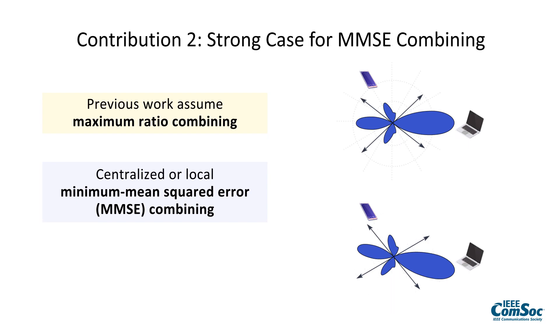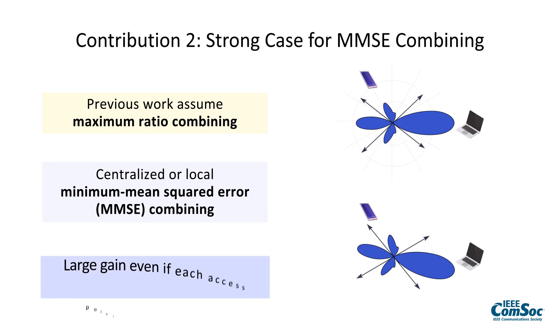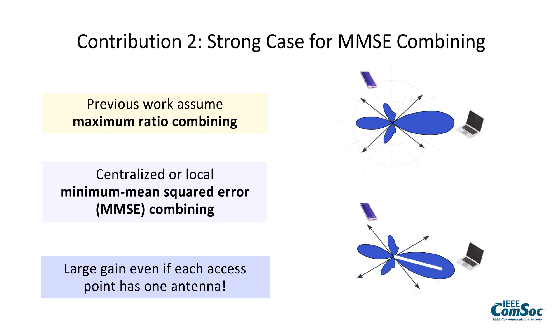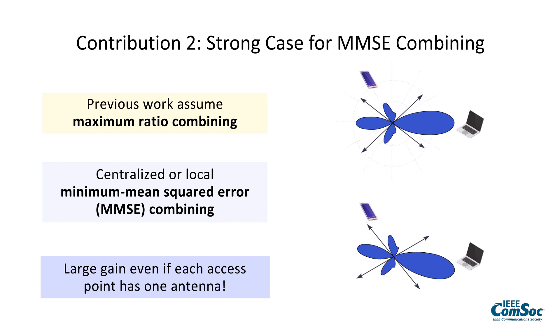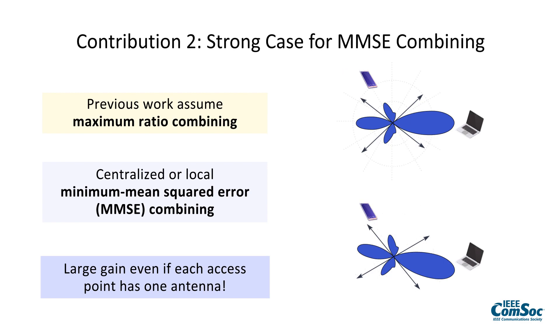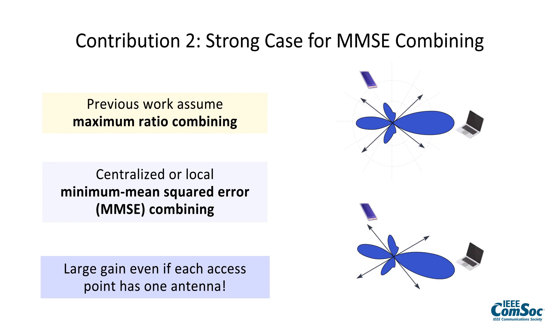They make the case that even if you have only one or a few antennas at an access point, it makes sense to direct your hearing so that you are balancing between the signal strength and the interference coming from that direction, which is illustrated by the beam pattern shown here.